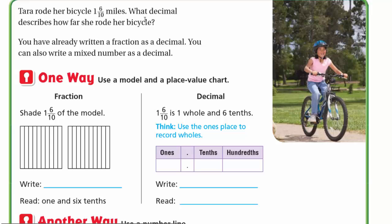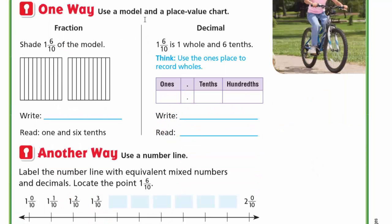Here, Tara rode her bicycle 1 and 6 tenths miles. What decimal describes how far she rode her bicycle? You have already written a fraction as a decimal; you can also write a mixed number as a decimal. We have two ways to do this — one way is to use a model and place value chart.